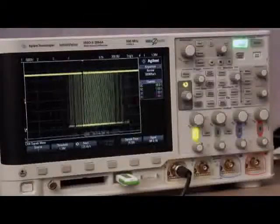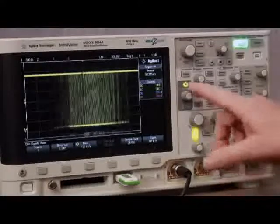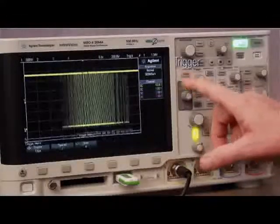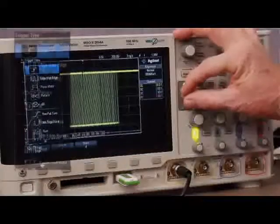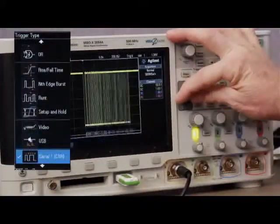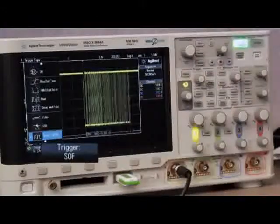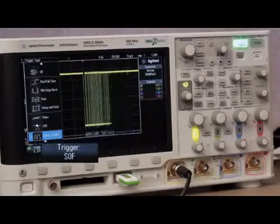To establish a more unique trigger condition, press the scope's front panel trigger key, then change from triggering on any edge crossing to triggering on CAN signals. The default CAN trigger condition is to trigger on the start of any frame.